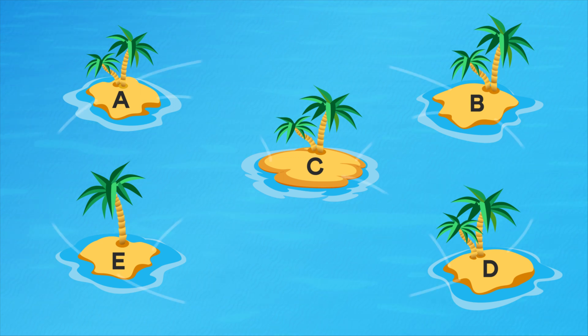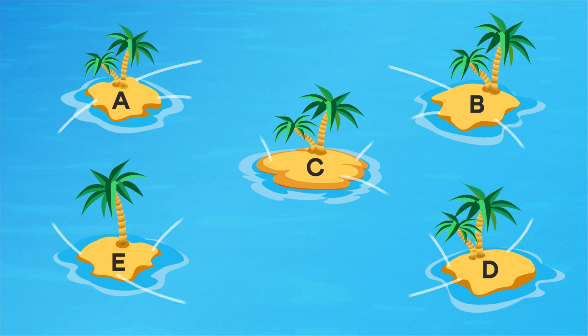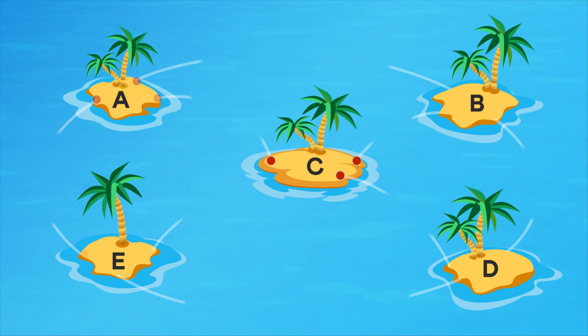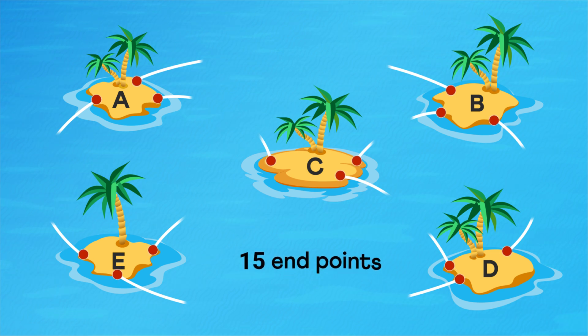Each island needs to have 3 connections. That's a total of 5 times 3, that is 15 points of connection. Let's call them endpoints. So we need 15 endpoints.